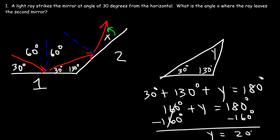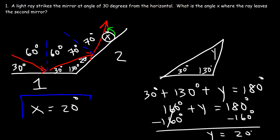The angle of incidence for the second mirror is going to be 90 minus 20, which is 70 degrees. And the angle of reflection for the second mirror is 70 as well, which means X is 90 minus 70, so X is 20 degrees.